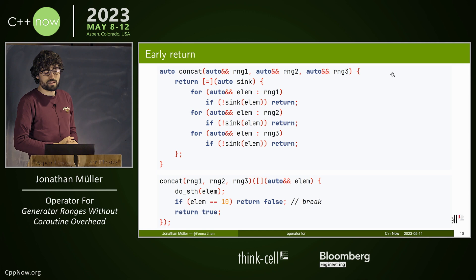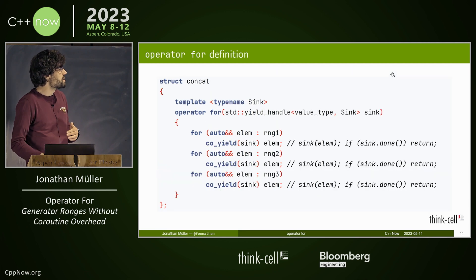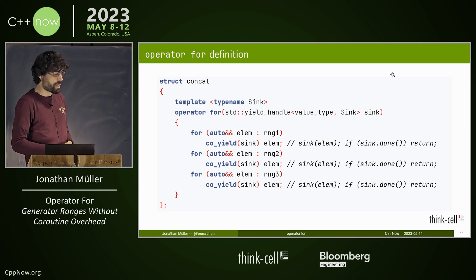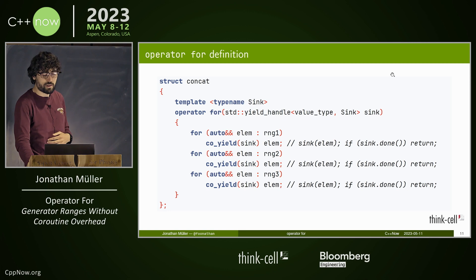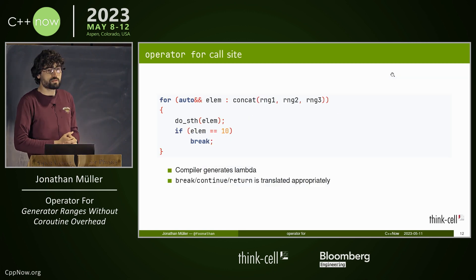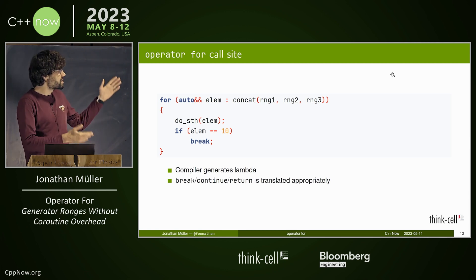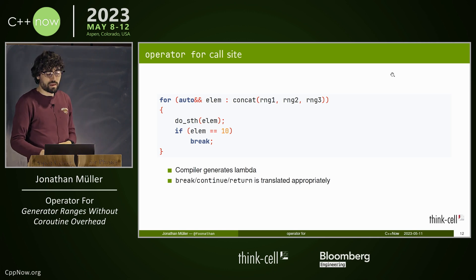However, it's not as nice to use on the user-facing side. So the idea is to give that pattern language support. You write an operator for — a function that takes a yield handle — and then you co_yield into that sink, which essentially just invokes the sink and checks if it's done. This looks just like coroutine code, but it's not actually a coroutine — it's the same callback code as before. The magic happens in the for loop: the compiler generates a lambda from the loop body, translates break to return false, translates return to store-and-return-false, and so on. We get all the advantages of coroutines without any of the disadvantages.